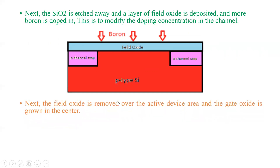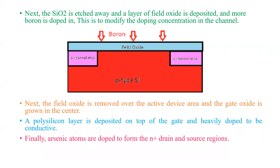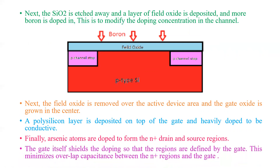Next, the field oxide is removed over the active device area and the gate oxide is grown in the center. A polysilicon layer is deposited on top of the gate and heavily doped to be conductive. Finally, arsenic atoms are doped to form N+ drain and source regions. The gate shields the doping so that the regions are defined by the gate, which minimizes the overlap capacitance between the N+ regions and the gate.